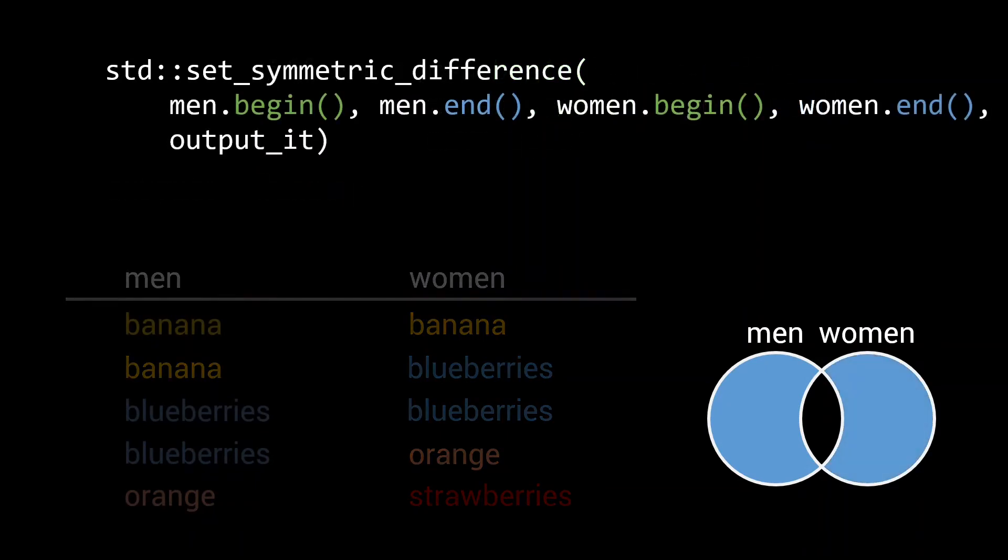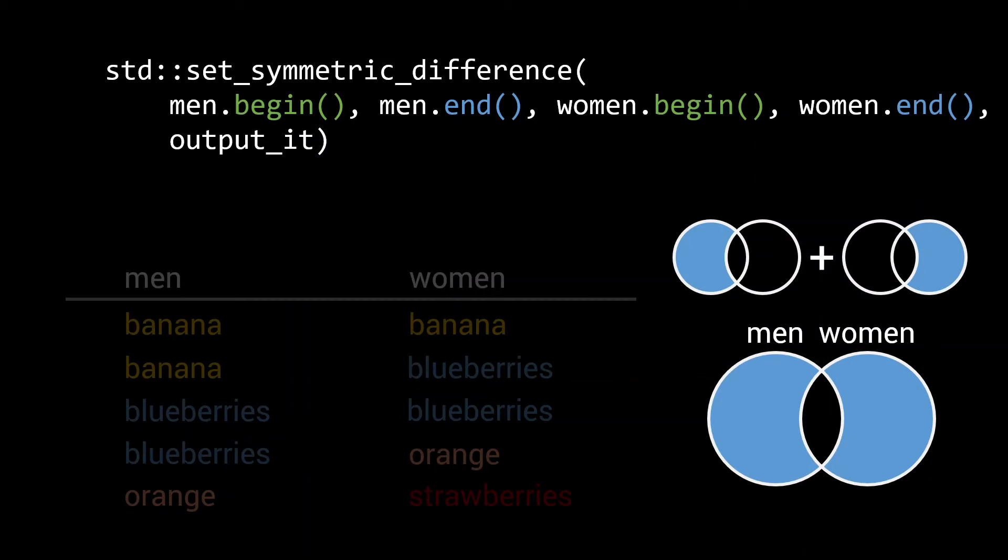The symmetric set difference is the result of taking the union of the set differences between the first and the second, and the second and the first set. In other words, it returns the elements that are unique to set 1 or to set 2.